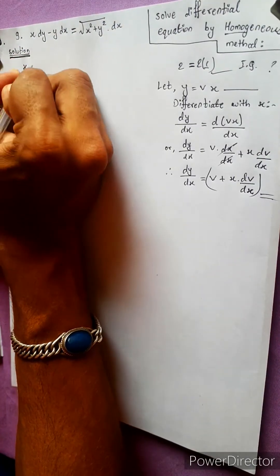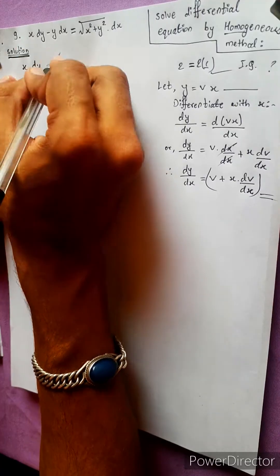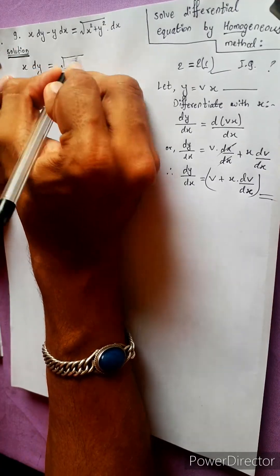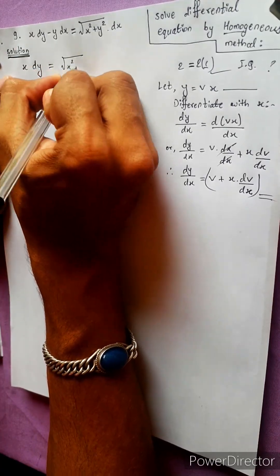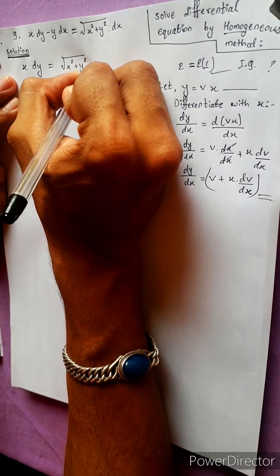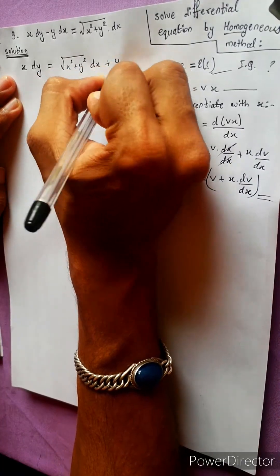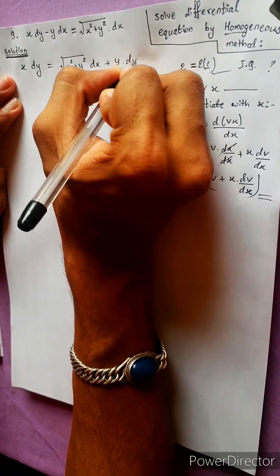x dy equals to x squared plus y squared dx, plus y into dx.